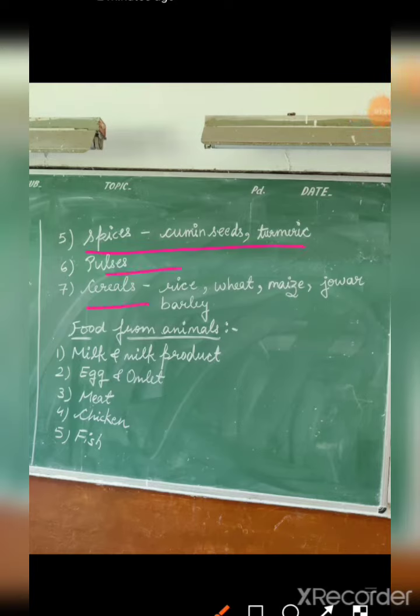The food that you get from animals is milk and milk products, egg and omelette, meat, chicken, and fish. All these foods you get from animals. Thank you so much children.